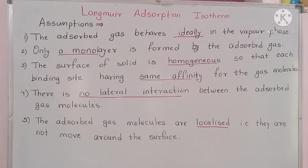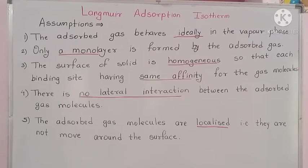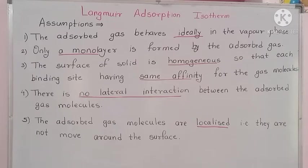The fourth assumption is that there is no lateral interaction between the adsorbed gas molecules. The gas molecules adsorbed on the solid surface cannot interact with each other — two gas molecules cannot react with each other. The fifth assumption is that the adsorbed gas molecules are localized, meaning they do not move around the surface; they are fixed on the adsorbed surface.